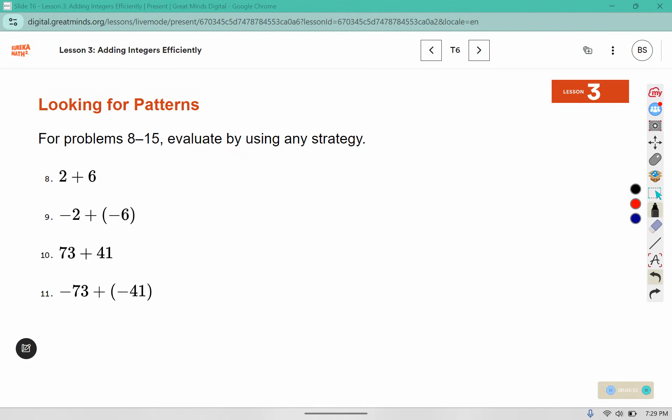For problems 8 through 15, evaluate by using any strategy. 2 plus 6 is 8. If I have negative 2 plus negative 6, I went back 2 and back 6 more. So that's going to put me at negative 8. 73 plus 41 would leave me with 114. If I had negative 73 and negative 41, that would be the opposite or negative 114.